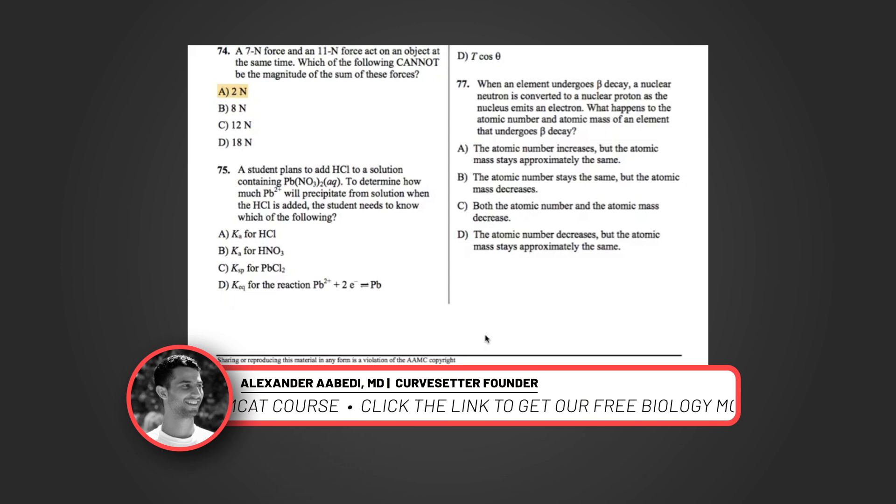C says the KSP for PbCl2. And yes, that's important. Because we need that KSP to see how much exactly we'll get precipitated, how much PbCl2 we'll get. And that's just based on the energetics of the reaction between the chloride, which is going to be free in solution once we drop in some hydrochloric acid, and the Pb2+, which dissociates from the NO3 once you drop it in water. So we're going to pick C as our answer.